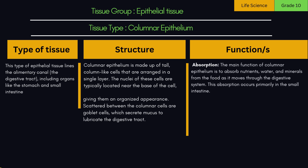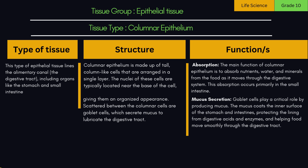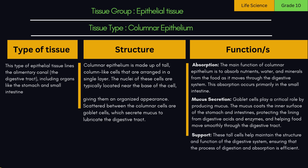Functions of columnar epithelium: 1. Absorption — the main function of columnar epithelium is to absorb nutrients, water, and minerals from the food as it moves through the digestive system. This absorption occurs primarily in the small intestine. 2. Mucus secretion — goblet cells play a critical role by producing mucus. The mucus coats the inner surface of the stomach and intestines, protecting the lining from digestive acids and enzymes, and helping food move smoothly through the digestive tract. 3. Support — these tall cells help maintain the structure and function of the digestive system, ensuring that the process of digestion and absorption is efficient.